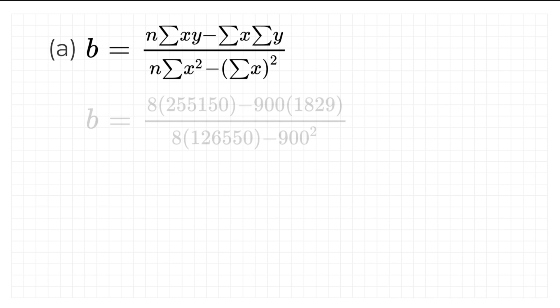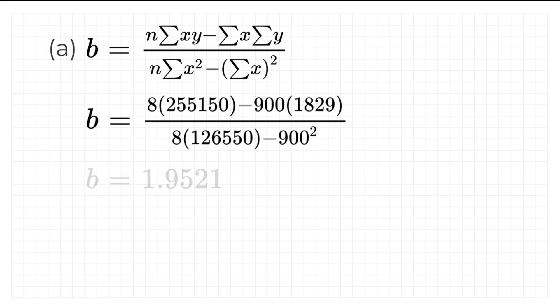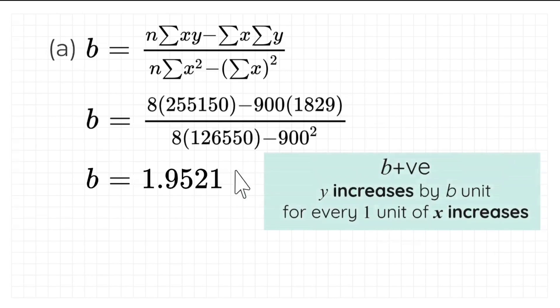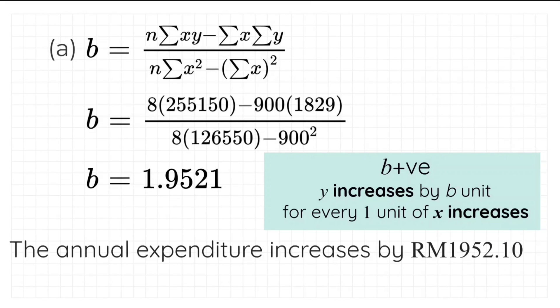We substitute n and all the summations into the coefficient b formula, giving b equals 1.9521. Our b here is positive. If b is positive, y increases by b units for every one unit increase in x. Therefore, we interpret this as: the annual expenditure increases by RM 1,952.10 for every increment of 100 families.